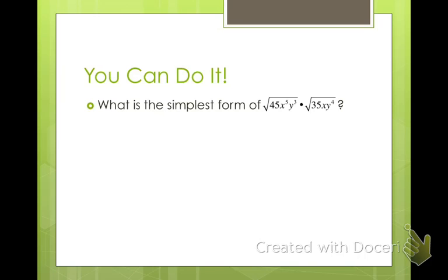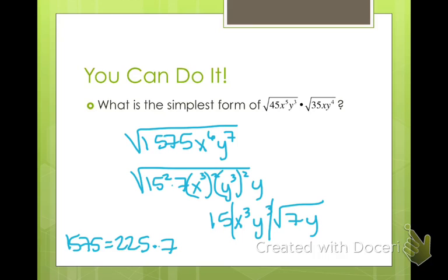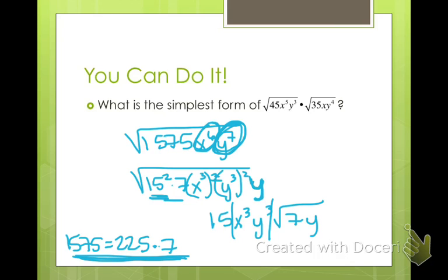Try this one. I multiplied and got 1575x to the 6th y to the 7th. 1575 is 225 times 7, and 225 is 15 squared. For x to the 6th, I have x cubed squared — two sets of x cubed. Same for y: the smallest perfect square power is y to the 6th, with one y left over. Taking the square root of all squared terms gives 15x cubed y cubed, with 7y left inside. Since my root is an even number, I have to use absolute values around the odd exponents: |15x³y³|√(7y).